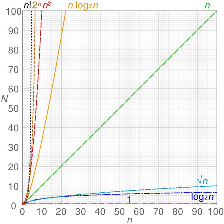An algorithm is said to be of polynomial time if its running time is upper bounded by a polynomial expression in the size of the input, i.e., T(n) = O(n^k) for some positive constant k. Problems for which a deterministic polynomial time algorithm exists belong to the complexity class P, which is central in the field of computational complexity theory. Cobham's thesis states that polynomial time is a synonym for "tractable", "feasible", "efficient", or "fast". The selection-sort sorting algorithm on n integers performs approximately A·n²/2 operations for some constant A, thus it runs in time O(n²) and is a polynomial time algorithm.